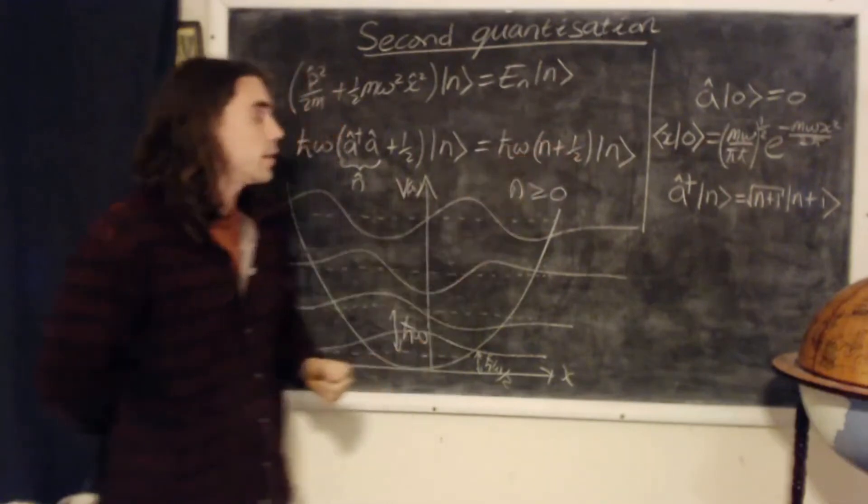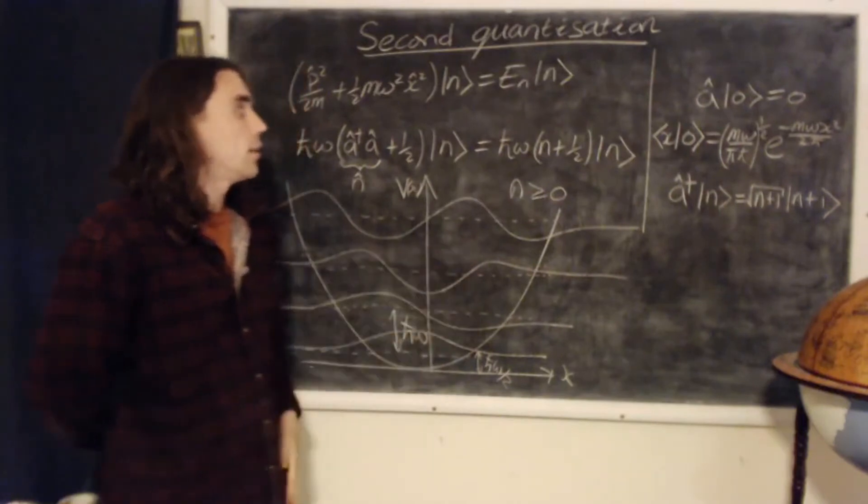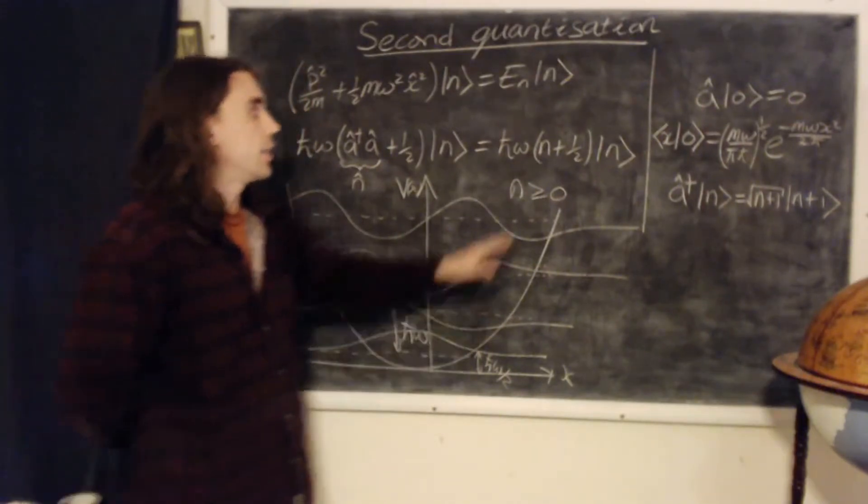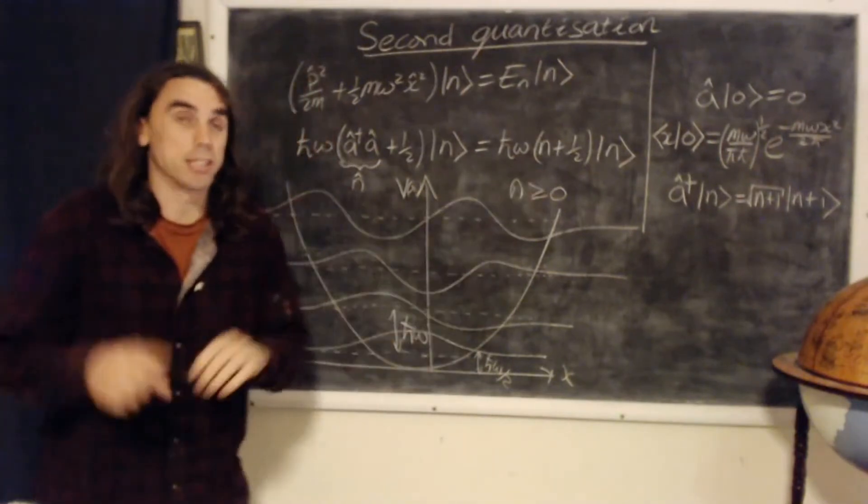But we can also interpret it as n individual particles sat in a well, where each particle has energy h bar omega, plus a ground state energy that we don't need to worry too much about.